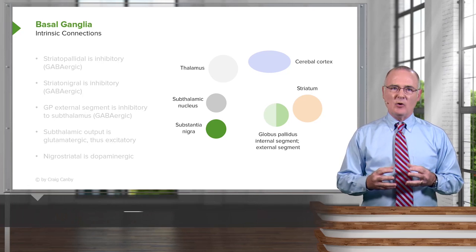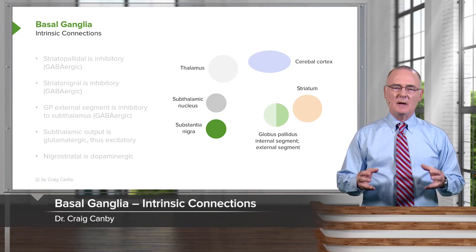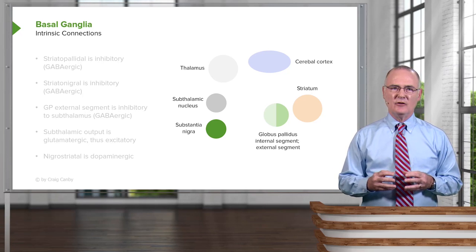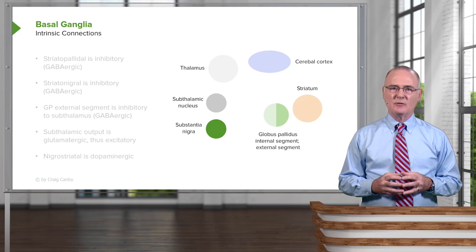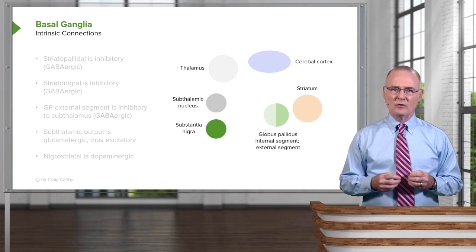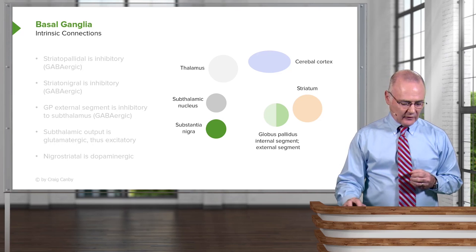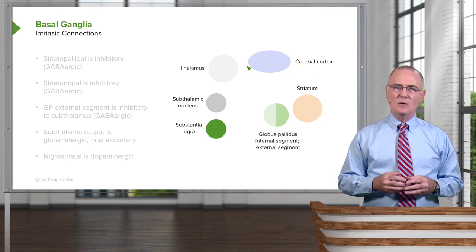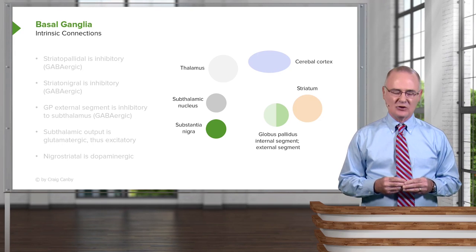This takes us to a more complicated aspect of the basal ganglia: the intrinsic connections, or the circuitry that exists between the components of the basal ganglia, as well as the thalamus and the cerebral cortex. Various brain structures are identified here, and I will now guide you through these connections.